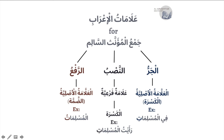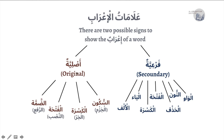But when the Jama' Mu'annath Salim is Mansub, it takes a secondary sign — which is the Kasra. For example: 'Ra'aytu al-Muslimati' — 'Muslimat' here is the Maf'ul bihi of 'Ra'aytu' (I saw), and the Maf'ul bihi is always Mansub. So 'Muslimat' is Mansub, but its sign of being Mansub is the secondary sign — the Kasra — not the original sign, the Fathah. Both Jarr and Nasb take the Kasra for this word type.